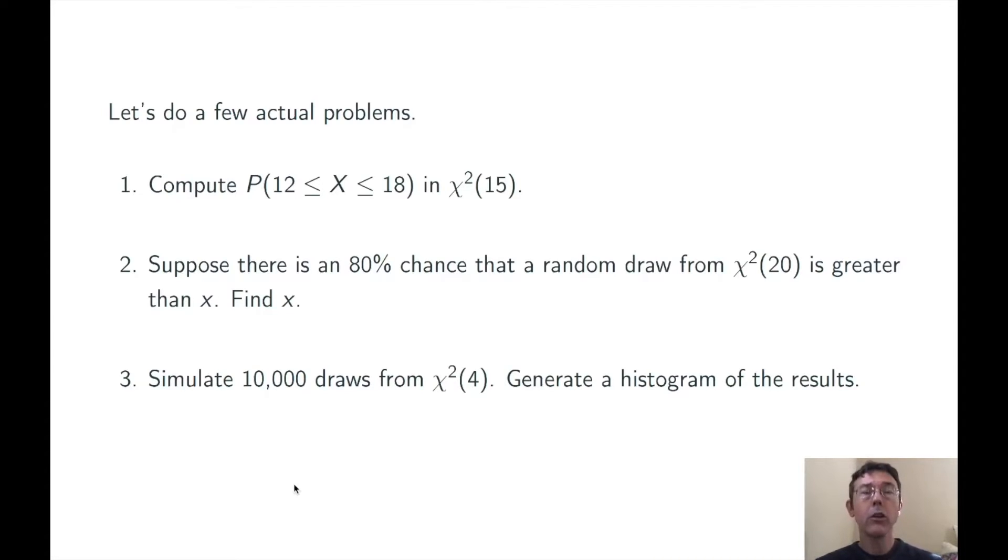This is going to be a qchisq problem. We're being given a probability or percentile, and we want to get back an x value. So inverse CDF. Now, one thing to watch out for is that in this case, we're given the probability that lies to the right of a specific value. And of course, an inverse CDF is going to take into account a probability that lies to the left. So we're going to need to use 0.2 for our probability rather than 0.8.